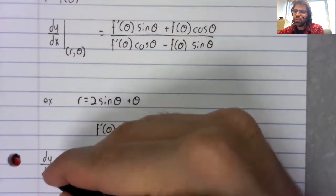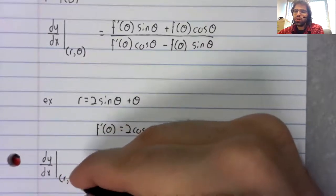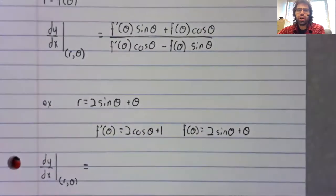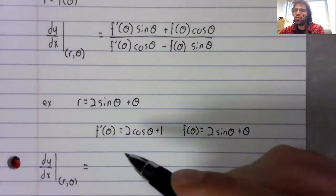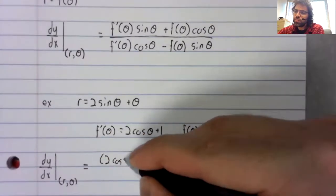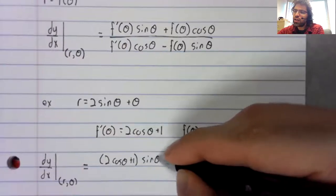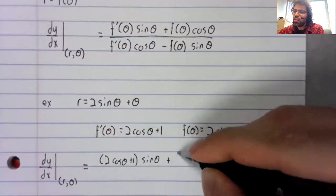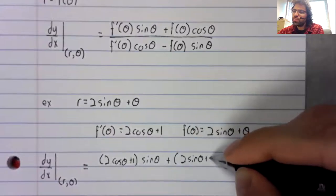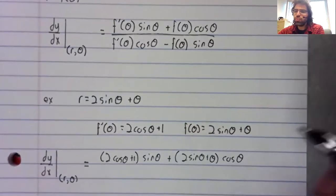And as unappealing as this might be to look at, it's very plug and play. We've got the derivative times the sine, plus the original function times the cosine,